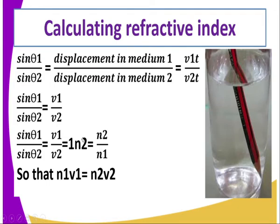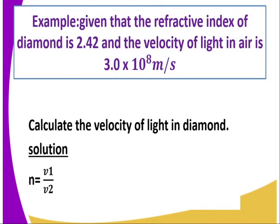So, by applying Snell's law and equating it to the constant, this gives us: the refractive index in medium 1 multiplied by the velocity of light in medium 1 is equivalent to the refractive index in medium 2 multiplied by the velocity of light in medium 2. Given that the refractive index of diamond is 2.42 and the velocity of light in air is 3.0 × 10⁸ metres per second, calculate the velocity of light in diamond.